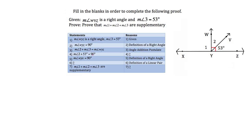Statement 4: measure angle 2 plus 53 degrees equals 90 degrees. We've taken statement 3 and substituted known values: measure angle 3 equals 53 degrees as given, and measure angle WYZ equals 90 degrees as proved in statement 2 by the definition of a right angle. So this step uses the substitution property.